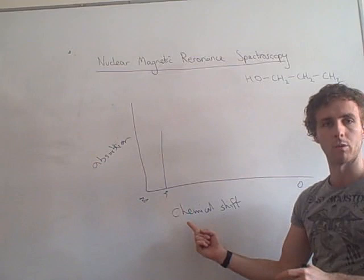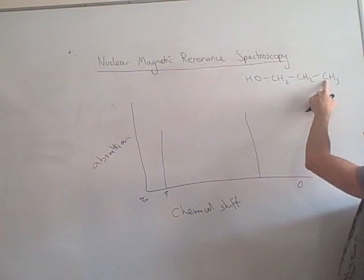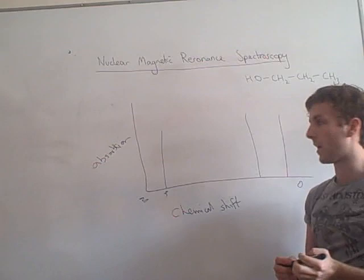This one here is going to have a little bit of its electron density pulled away, so that's going to absorb somewhere down here. And this one here, because that's got loads of electron density around it, that's shielded loads from the magnetic field, so that doesn't take much energy at all to flip it, so that'll be somewhere down here. And that's a very, very simplified way of how it works.